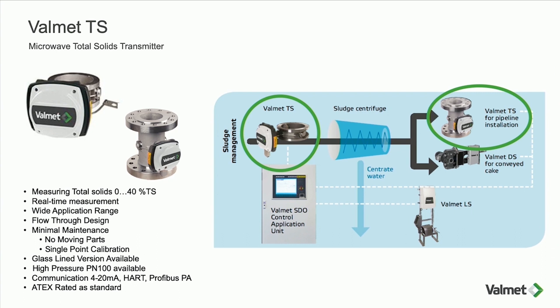It's a very simple device. We use a time-of-flight microwave measurement method — we measure the speed that the microwave passes across a pipe, which has a linear correlation to the amount of solids in the pipe, so we can generally use a single-point calibration. There are no moving parts, so maintenance is very low with no regular maintenance required. In some applications there can be a build-up of fat, so we have a glass-lining version available — that's typically needed at the beginning of the process around primary clarifiers.